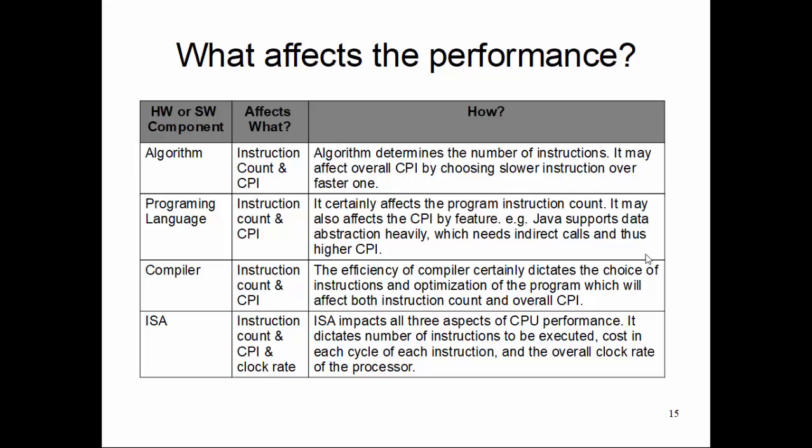Now let's go a little bit deeper into what really affects the performance of a computing system. We have various components like software and hardware. Even in software we have algorithmic components, programming language choice, compiler choice, different compiler revisions, and instruction set architecture which affects the hardware.